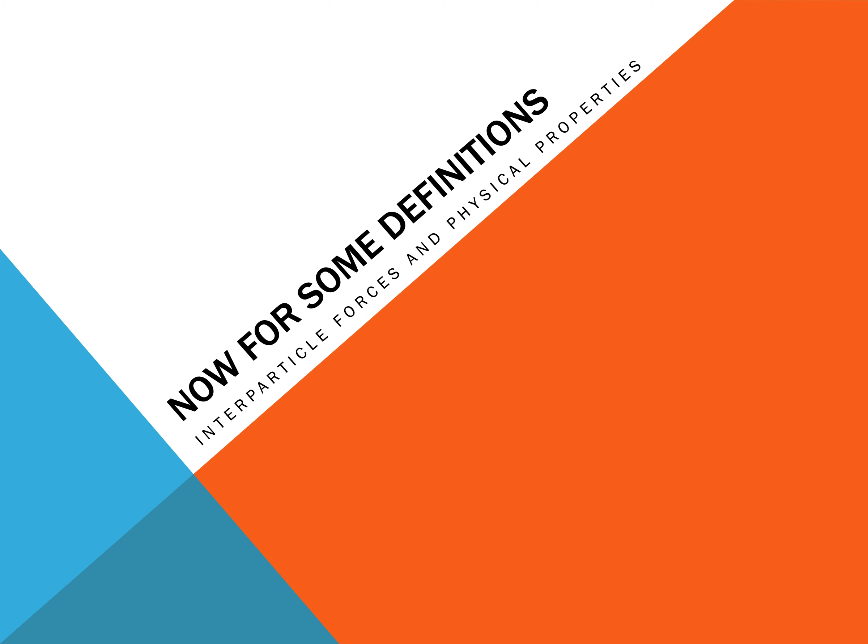So now we're going to look at some definitions of physical properties of different covalent substances. And a lot of what we're going to talk about right now is water.